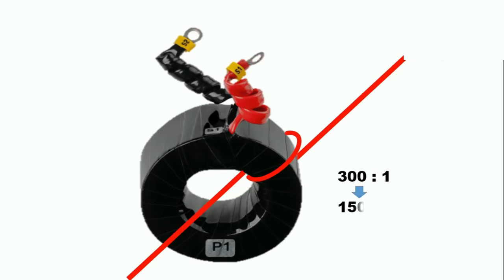Now the ratio will be reduced. The ratio of our CT was 300 by 1, now it becomes 150 by 1. We made one turn of wire around the CT, so the ratio becomes 150 by 1.